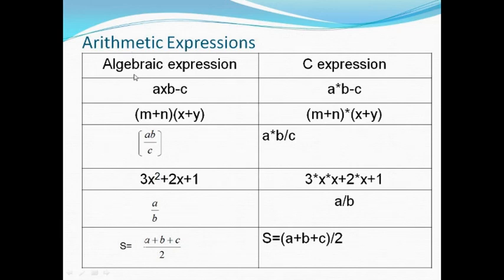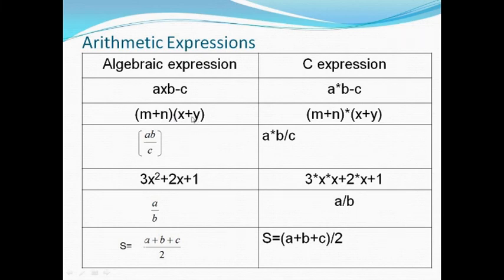Here we see the difference between algebraic expressions and C expressions. In maths we write a into b minus c, but in a C expression we cannot use the 'into' symbol — we must write it as a * b - c, where the star symbol is used for multiplication. Similarly, the algebraic expression (m + n)(x + y) must be written in C as (m + n) * (x + y). If it is ab divided by c, in C it should be written as a * b / c.